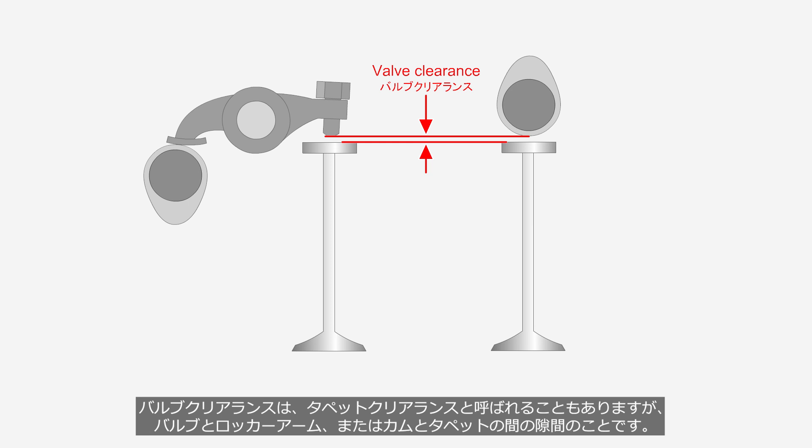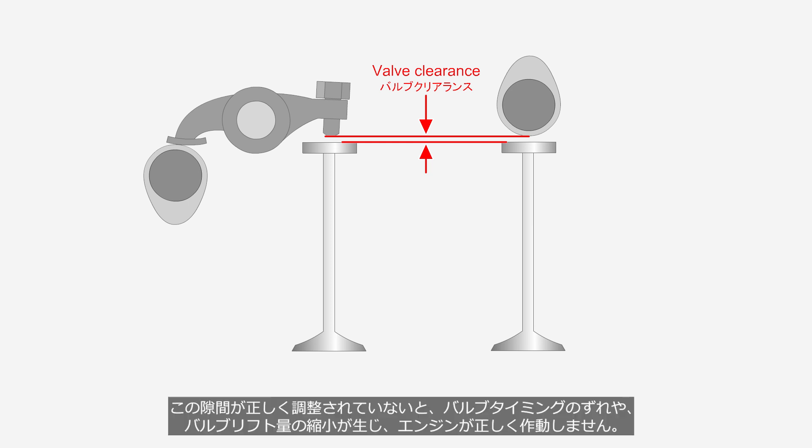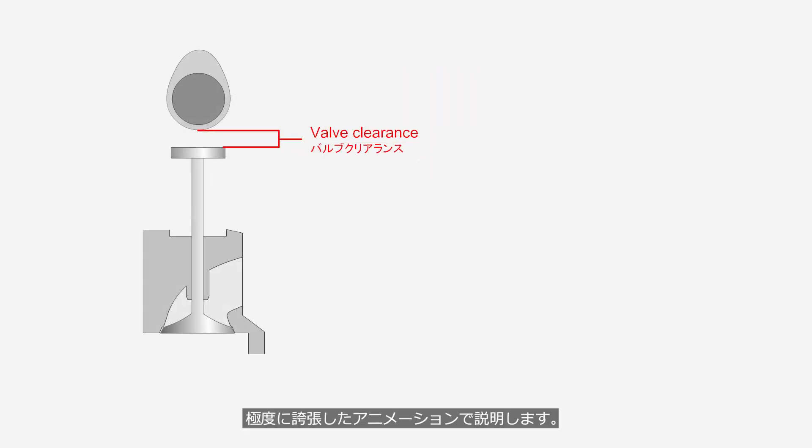Valve clearance, also referred to as tappet clearance, is the gap between the valve and the rocker arm, or between the cam and the tappet. If this gap is not properly adjusted, it can cause a shift in valve timing or a reduction in valve lift, leading to improper engine operation. We will learn through highly exaggerated animation. At the moment, this engine is cold, and the valve clearance is properly adjusted.